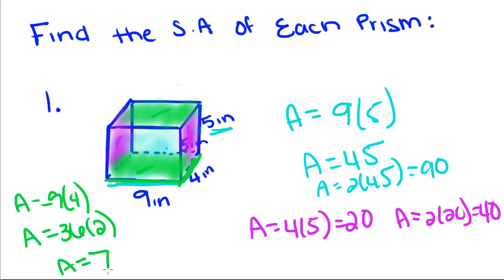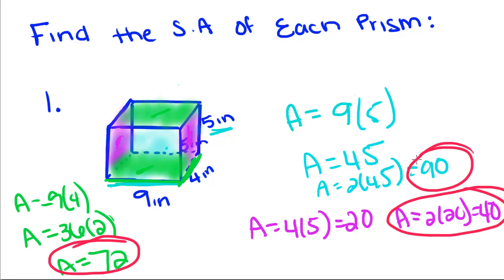And we get the area of that part of 72. So now we're going to take this, and this, and this, and add them all together to get the surface area of the whole thing. So 90 plus 40 plus 72. And if you type that into a calculator, you'll get the surface area is equal to 202.